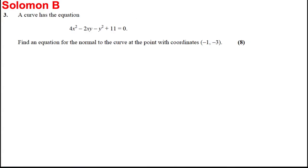The question on implicit differentiation: we're given a curve with the following equation, and we're asked to find the equation of the normal to the curve at the point with coordinates (-1, -3).